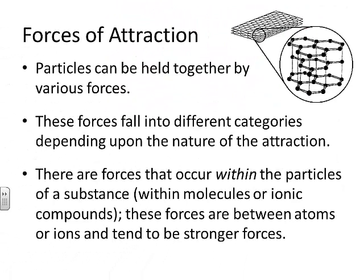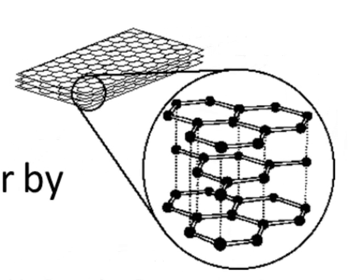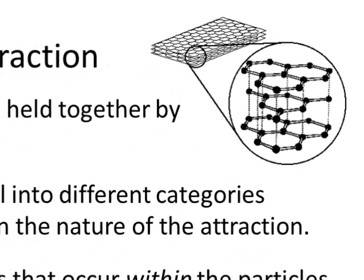Particles can be held together by different types of forces. These forces fall into different categories depending upon what is causing the attraction. There are forces that occur within the particles of a substance — within molecules, or within ionic compounds between the ions — and these forces between atoms or ions tend to be stronger. In this picture we see graphite, which has particles attached with strong bonds in layers, but the attractions between these separate layers are much weaker.